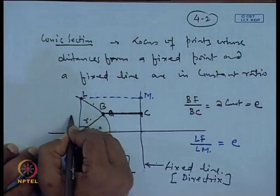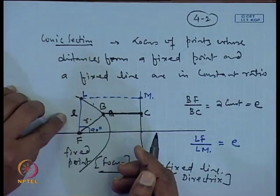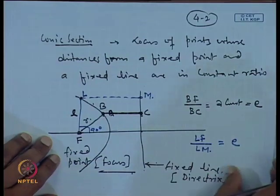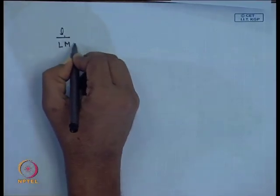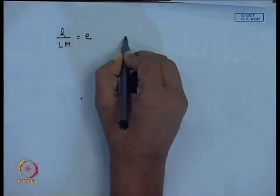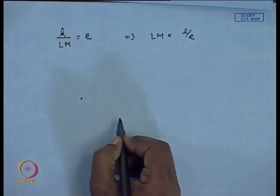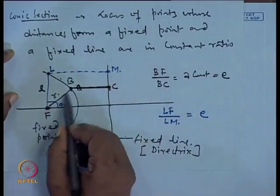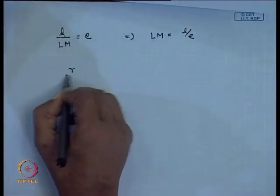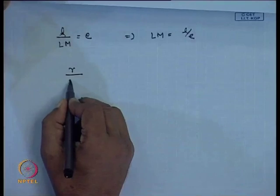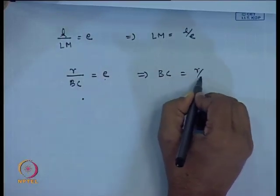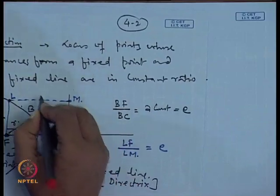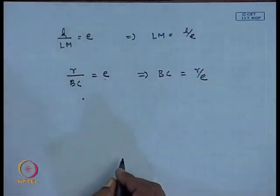This distance L·f we write as l, and this is called the semi-latus rectum. Putting L·f equal to l, therefore l divided by L·m equals E, which implies L·m equals l/E. Similarly, B·f is the distance written as R, so B·f is R and B·c is in a constant ratio equal to E, therefore B·c equals R/E. So this distance becomes l/E and this distance becomes R/E.